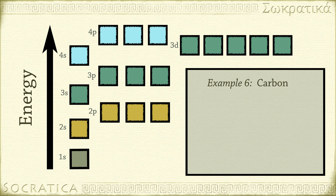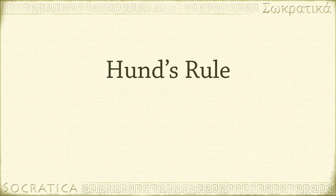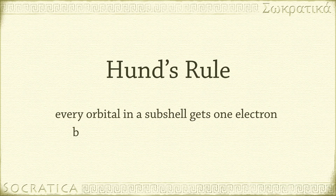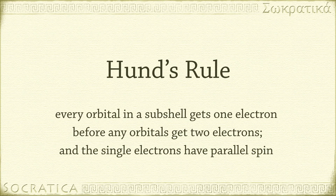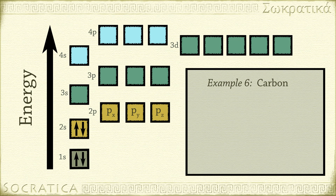Carbon has six electrons. Where does that second electron go in the p orbitals? According to Hund's rule, every orbital in a subshell gets one electron before any orbitals get two electrons, and each of the single electrons have parallel spin. So we put the next electron in 2py, with an up arrow to show it has the same spin as the electron in the 2px orbital.